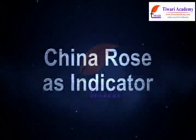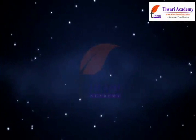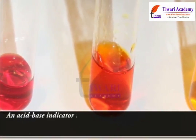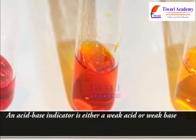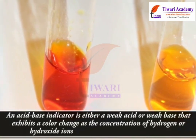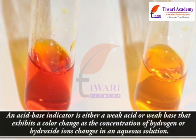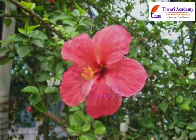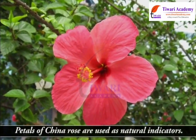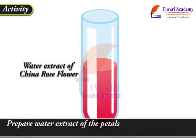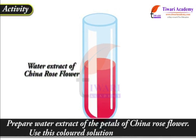China Rose as an indicator. An acid-base indicator is either a weak acid or weak base that exhibits a color change as the concentration of hydrogen or hydroxide ions changes in an aqueous solution. China Rose is used as a natural indicator. Petals of China Rose are used as natural indicators. Prepare a water extract of the petals of China Rose flower and use this colored solution as an indicator.